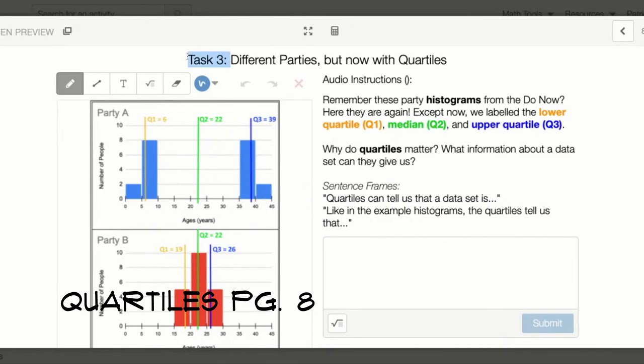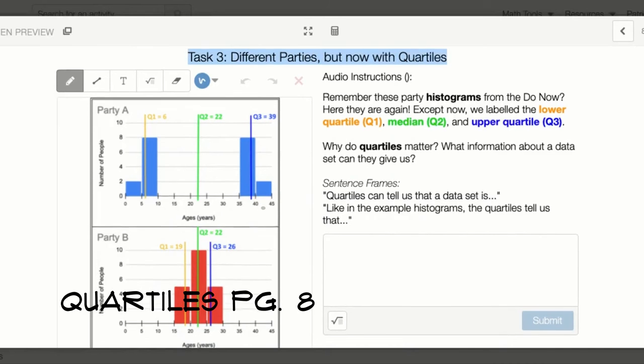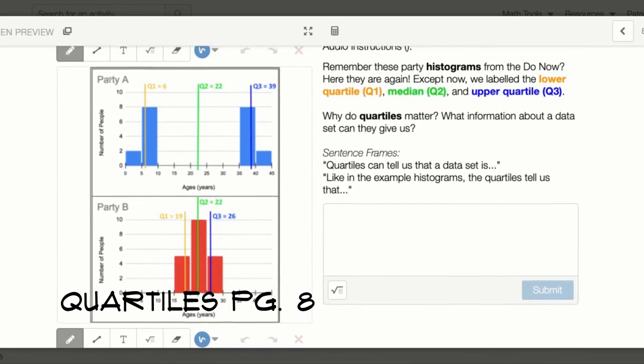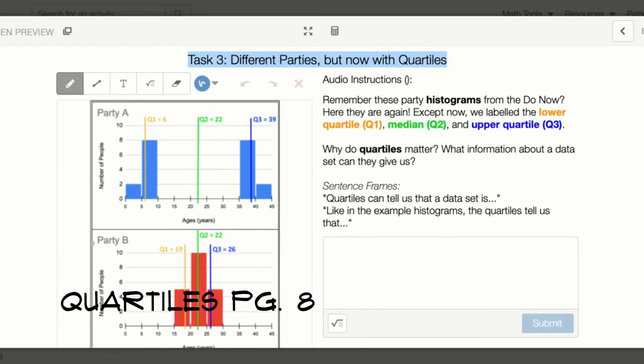Page 8. Task 3: Different parties but now with quartiles. Left side is the party A and party B. The number of people over here and the histograms with the quartiles Q1, Q2, Q3, and so on, and Q4.